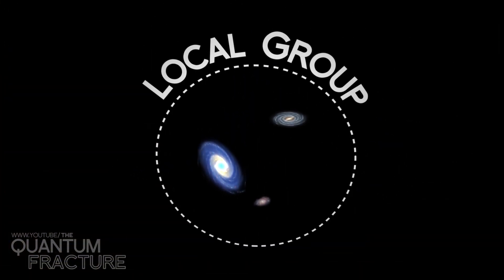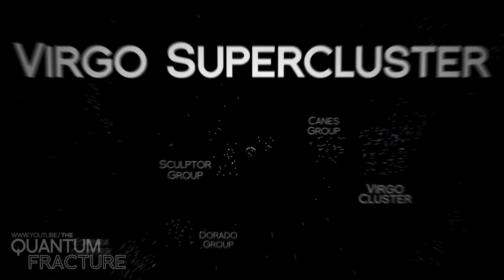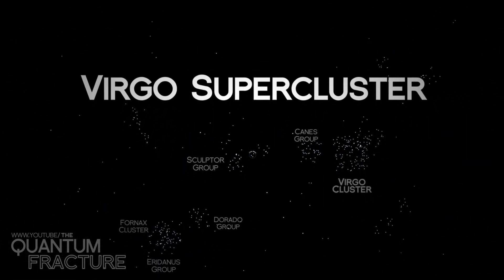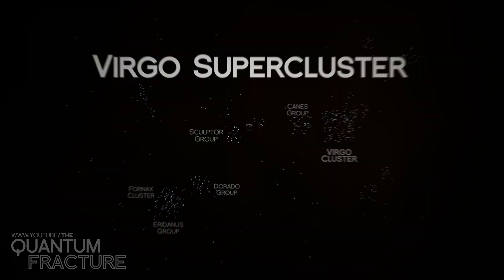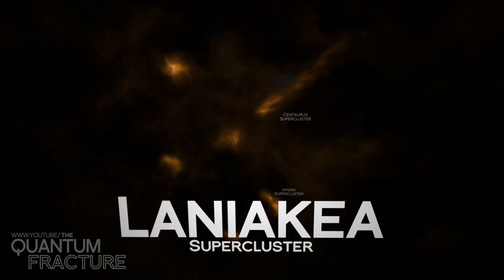But we're not done yet. The local group and many more galaxies lie inside the Virgo supercluster. Although recent research indicates that we're part of an even larger structure called the Laniakea supercluster.